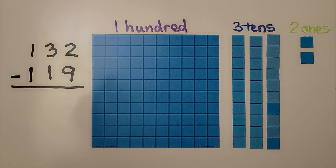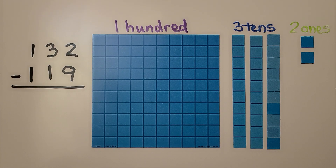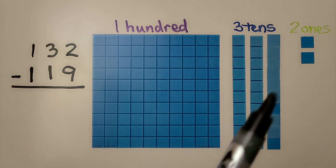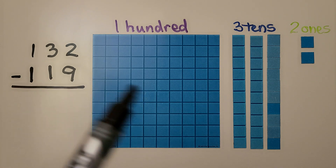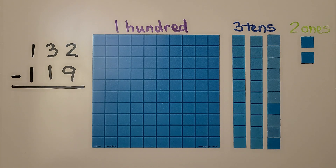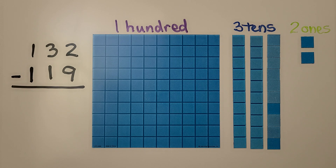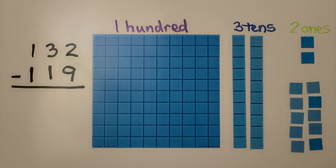We have 132 minus 119. We have 100, three tens, two ones. We're trying to take away 119. We can't take away nine ones — there's only two of them. So we can take this ten and break it into ten ones. Now we can take nine away.